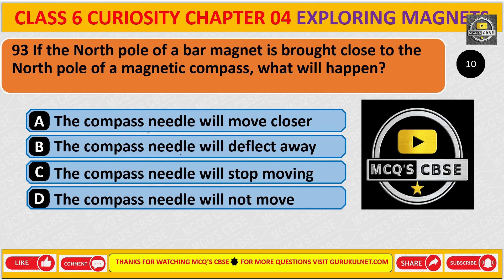If the north pole of a bar magnet is brought close to the north pole of a magnetic compass, what will happen? The correct answer is B. The compass needle will deflect away.